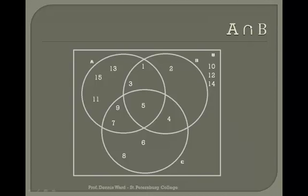Here's our first operation: intersection, shown by this upside-down U shape. Intersection means things that belong to both A and B. If you think about a street intersection, we're talking about the concrete that's both on First Street and Avenue A. So the items in A and the items in B — the ones shared by both — are one, three, and five. They're in the football-shaped area shared by A and B. Since there's no mention of C, we don't care whether items are in C or not.